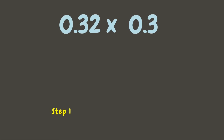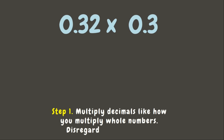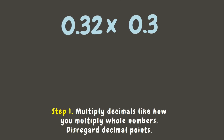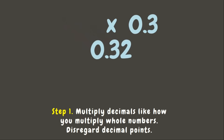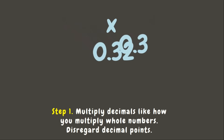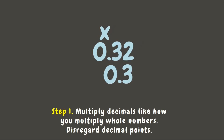In multiplying decimals, it is different from adding and subtracting. Here we don't have to align the decimal places. We are just simply going to multiply decimals like how we multiply whole numbers. At this point, disregard the decimal points.